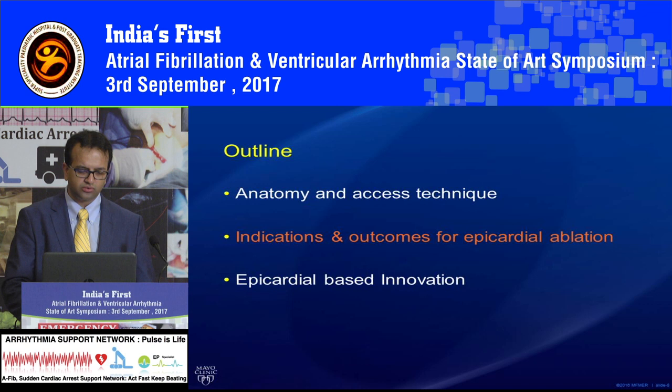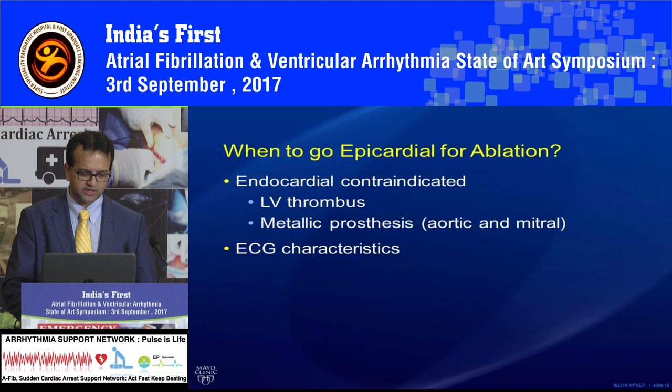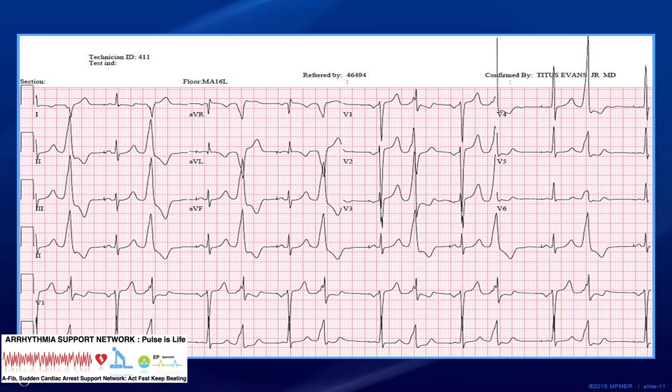Who needs epicardial ablation and epicardial access? You can use epicardial or pericardial access for epicardial mapping and ablation for ventricular tachycardia and atrial arrhythmias. Soon you will also hear about newer devices that can be used for appendage-based ligation. Epicardial ablation is indicated when there is thrombus in the left ventricle, when you cannot enter the left ventricle due to mechanical or prosthetic aortic or mitral valves, or when specific ECG patterns suggest an epicardial source.